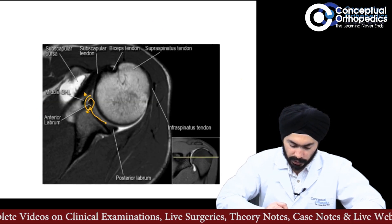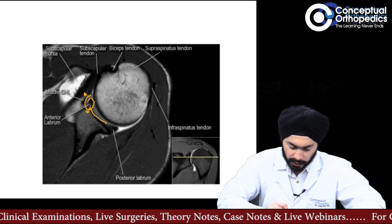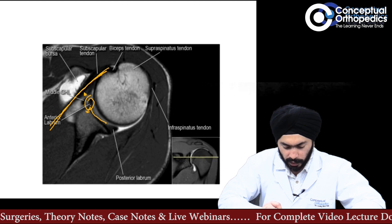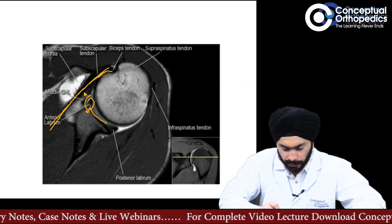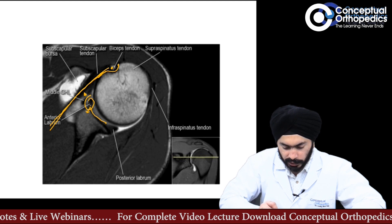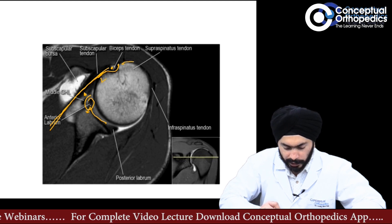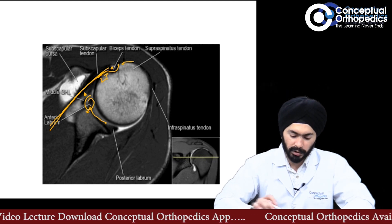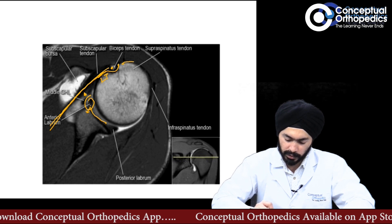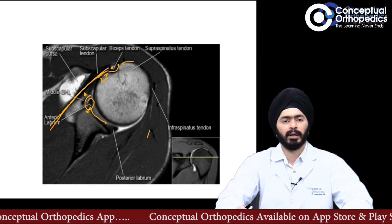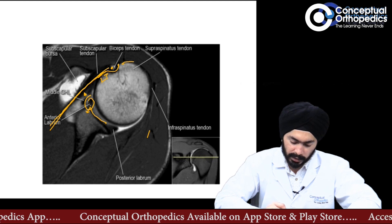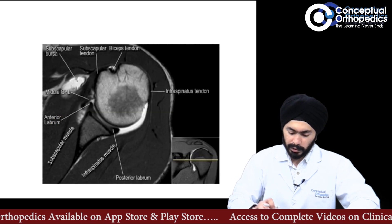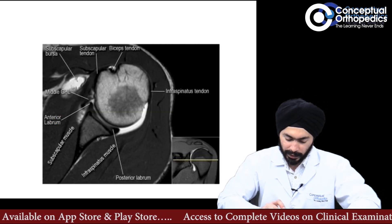Another important structure to identify: when you stop seeing the coracoid, you will see the supraspinatus muscle attaching on the greater tuberosity. This is the biceps groove, the greater tuberosity (GT), and the lesser tuberosity (LT). The subscapularis muscle attaches on the lesser tuberosity, and here posteriorly is the posterior cuff — the supraspinatus and infraspinatus. If there is a tear of the subscapularis, the muscle will be displaced and not attaching on the LT.